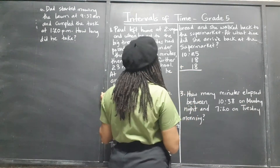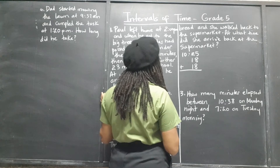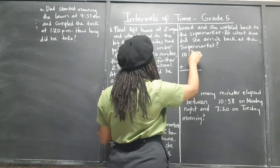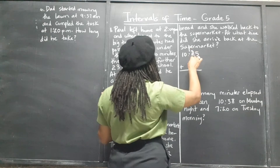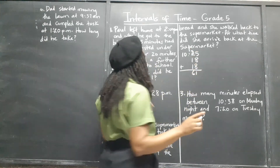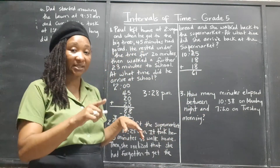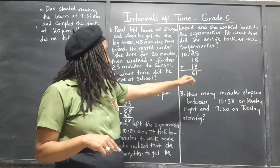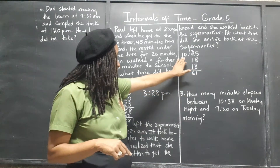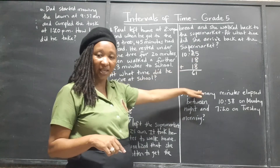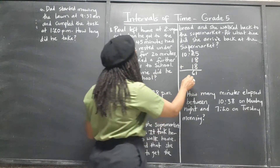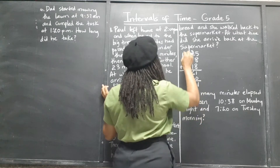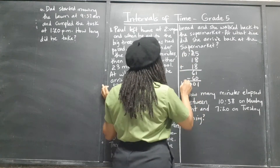When we add those: 8 + 8 = 16, and 5 + 2 = 7, giving 10:61. We know we're supposed to take out 60 minutes — we can't leave 61 under the minutes. We have to take out the group of 60, which leaves 1 minute. So that's 11:01.